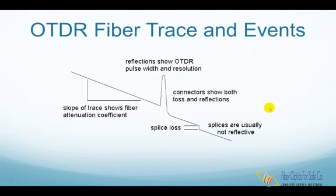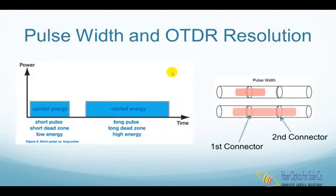Reflective pulses can show you the resolution of the OTDR. You cannot see two events closer than is allowed by the pulse width. Generally, longer pulse widths are used to be able to see farther along the cable plant, and narrower pulses are used when high resolution is needed, although this limits the distance that the OTDR can see.